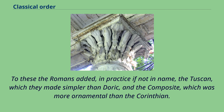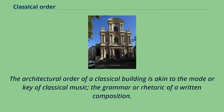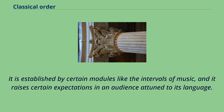To these the Romans added, in practice if not in name, the Tuscan, which they made simpler than Doric, and the Composite, which was more ornamental than the Corinthian. The architectural order of a classical building is akin to the mode or key of classical music, the grammar or rhetoric of a written composition. It is established by certain modules like the intervals of music, and it raises certain expectations in an audience attuned to its language.